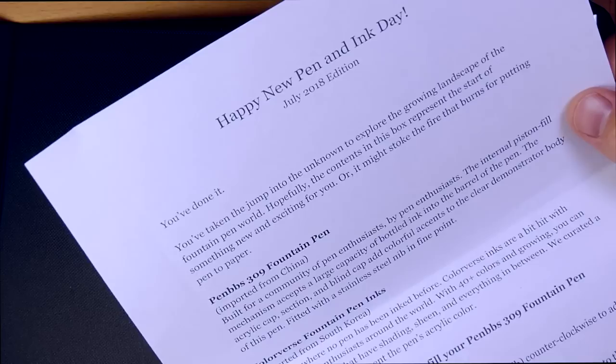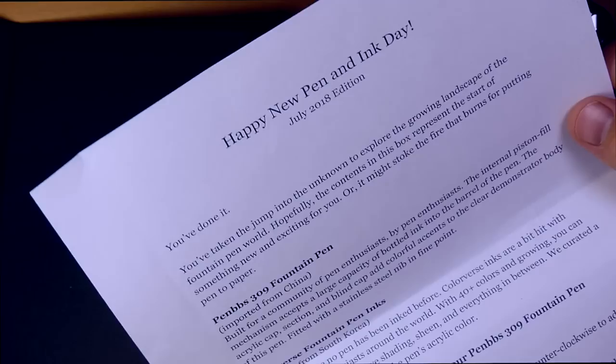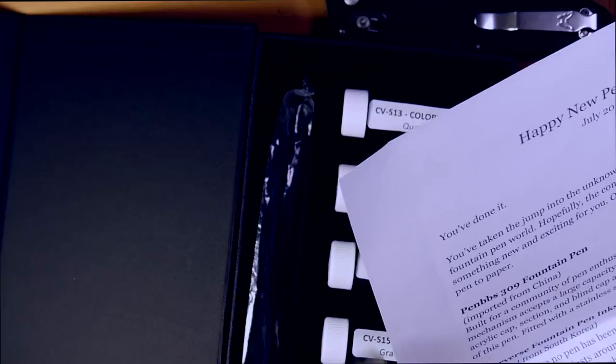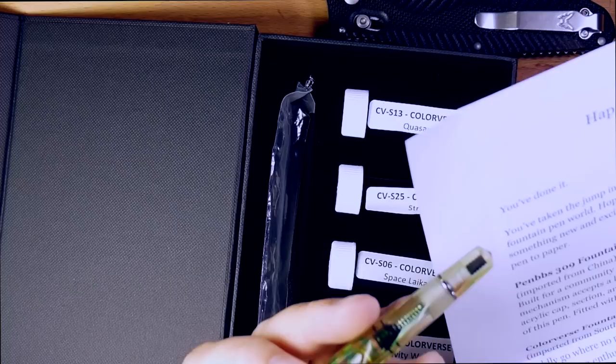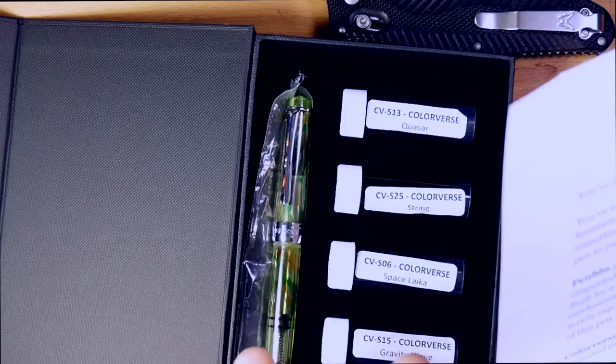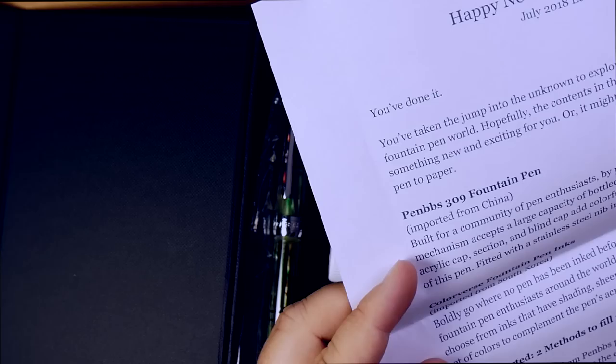All right, let's look at the documentations here. And I really do dig this box they did with these holes for these five ink samples and then the pen. So let's see. This guy up. You've done it. You've taken the jump into the unknown to explore the growing landscape of the pen world. Hopefully the contents of this box represent the start of something new and exciting for you. Or it might stoke the fire that burns for putting pen to paper. This is a PenBBS 309 fountain pen imported from China. Built for a community of pen enthusiasts by pen enthusiasts. The internal piston filling mechanism accepts a large capacity of bottled ink into the barrel of the pen. The acrylic cap section blind cap add colorful accents to the clear demonstrator body of this pen. Well, it's all kind of the same color. Okay, fitted with a stainless steel nib and fine point. Yeah, fine point's a good safe one. I'm glad they went fine. Medium is kind of the thing I think most people go with, but I think nobody's going to be mad about a fine pen, a fine point nib.